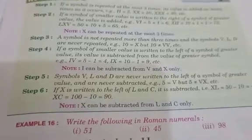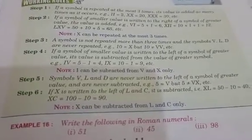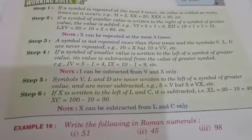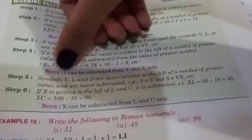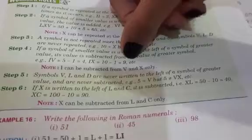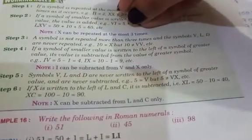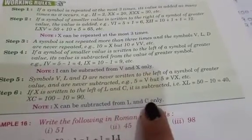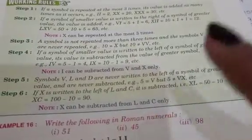Let us continue with the same concept of Roman numbers. We have to keep in mind two things: one can be subtracted from V and X only, meaning 1 can be subtracted from 5 and 10 only, and 10 can be subtracted from L and C, that is 50 and 100 only.